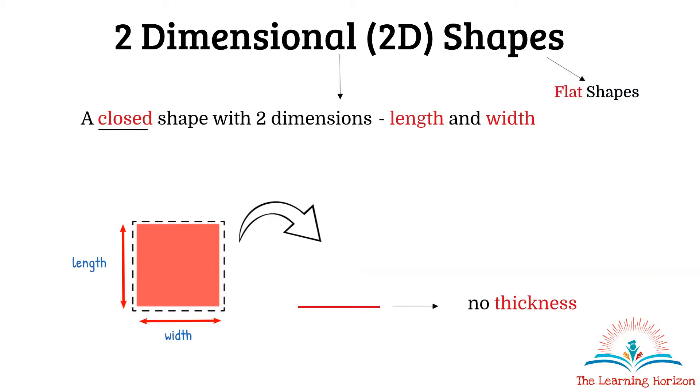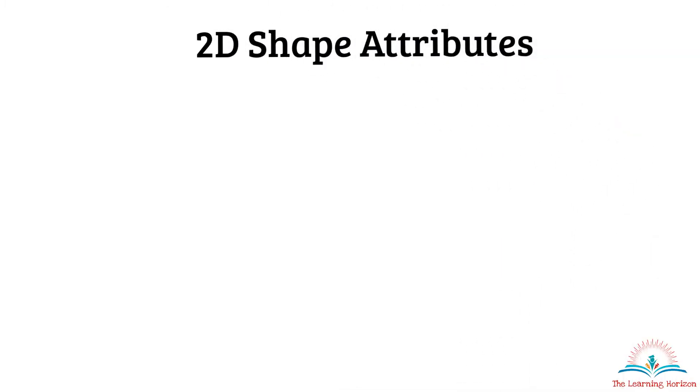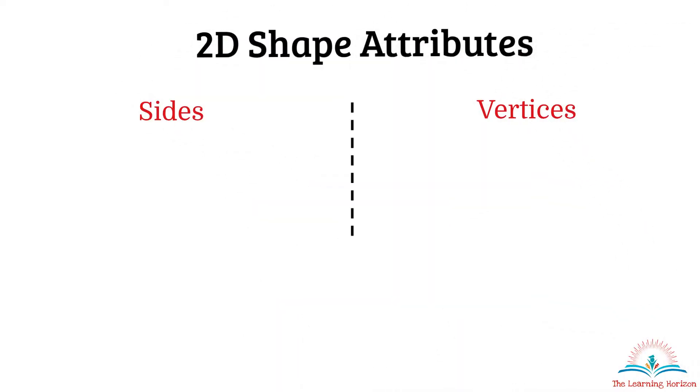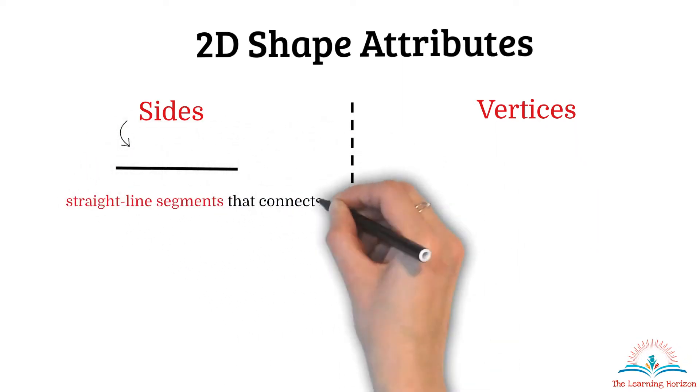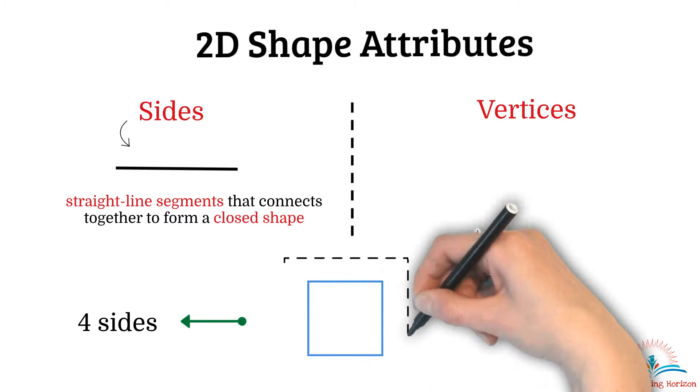Two-dimensional shapes have some important attributes, and in this video we will talk about two basic attributes like sides and vertices. Sides are the straight line segments that connect together to form a closed shape. For example, 1, 2, 3, 4. Here we have four straight line segments, that is we have four sides that are connected together to form a closed shape.